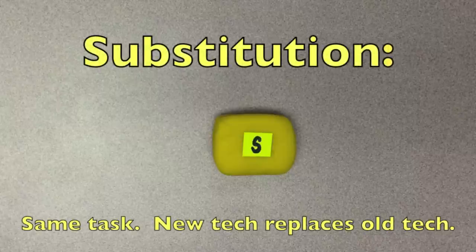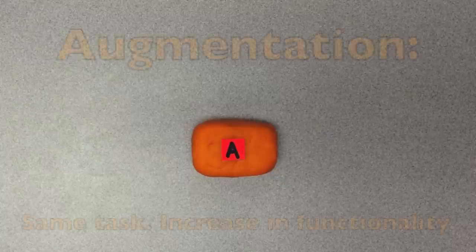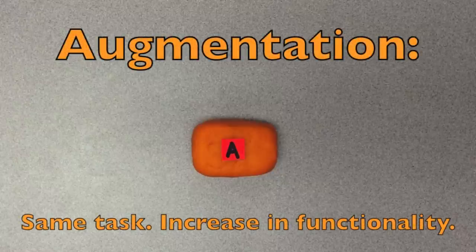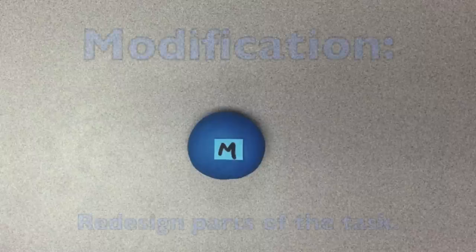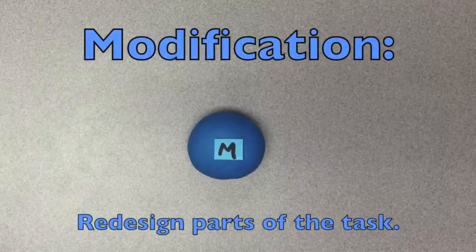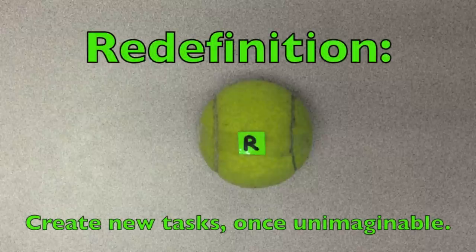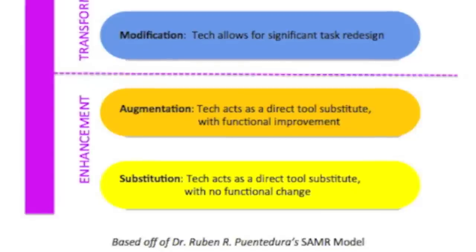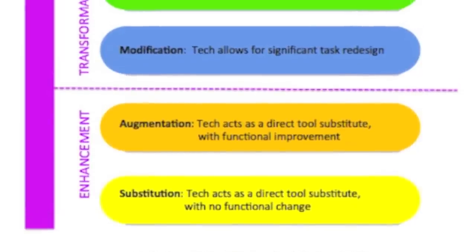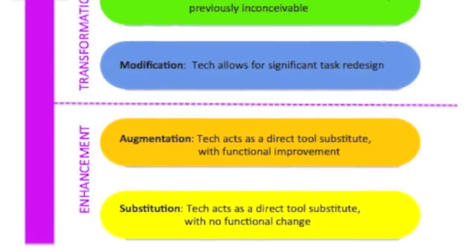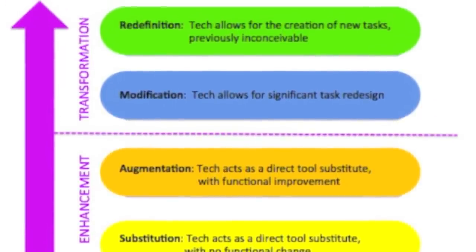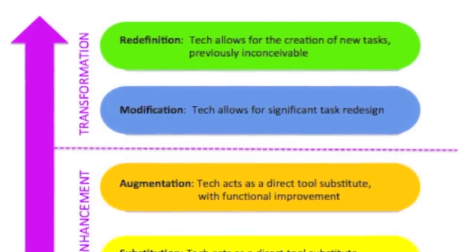To recap: substitution is the same task, new tech replaces old tech. Augmentation is the same task, but the tech increases functionality. Modification — we're able to redesign parts of the task. Redefinition — we're able to create new tasks once unimaginable. As we move from substitution to redefinition, we're moving from enhancing to transforming student learning.